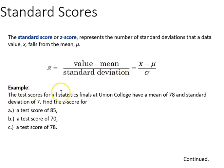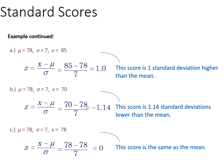For example, we have test scores from a statistics final at Union College with a mean of 78 and standard deviation of 7. If we want to find the z-score for 85, 70, and 78, we then come over here and plug in those values.